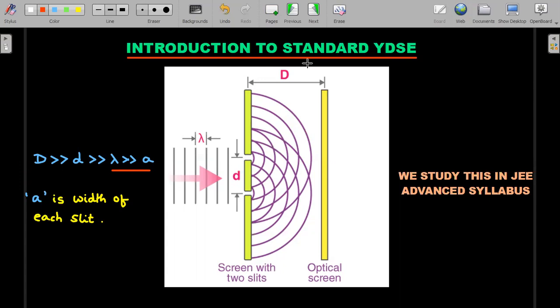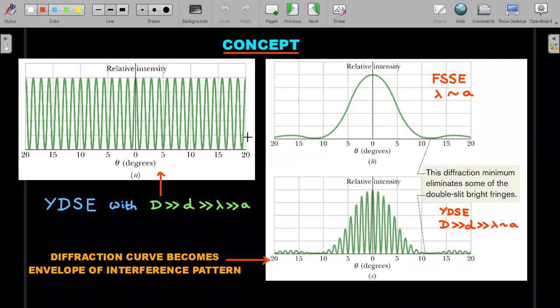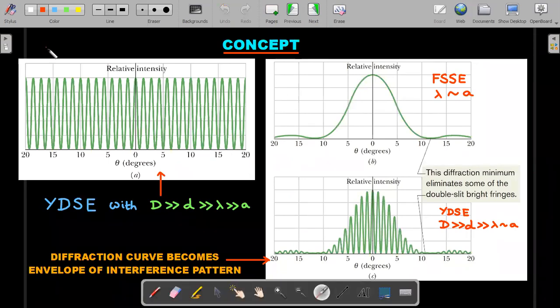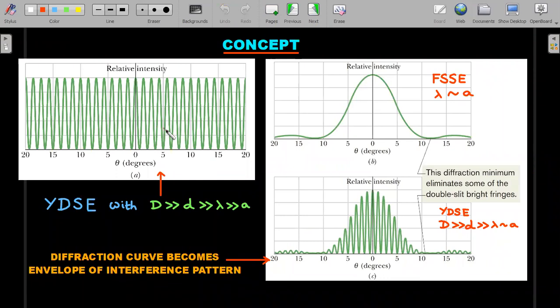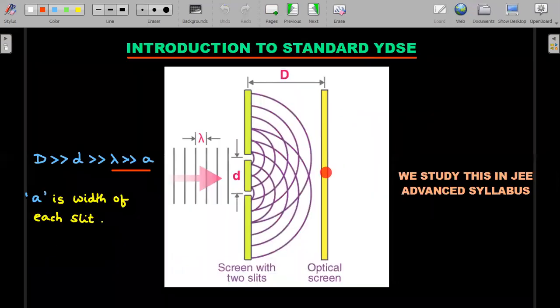Then what happens in the JEE Main syllabus when we study diffraction as a single slit experiment, we relax that condition. So here we go with the concept. A lot of things on the screen, just follow my lead so that one by one we will be able to understand the things. The diagram first one on the left side of your screen represents the intensity or relative intensity on the screen from the center of the screen as you move outwards on either side.